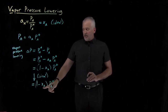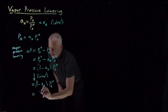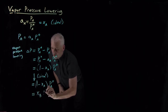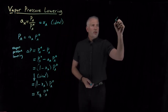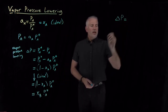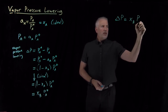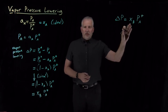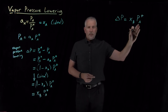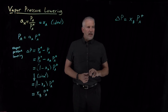Then (1 minus mole fraction of A) — that is, 1 minus the fraction of the solution that's solvent — is just going to be the mole fraction of the solute. So the vapor pressure lowering in an ideal solution equals the mole fraction of the solute multiplied by the vapor pressure of the solvent.